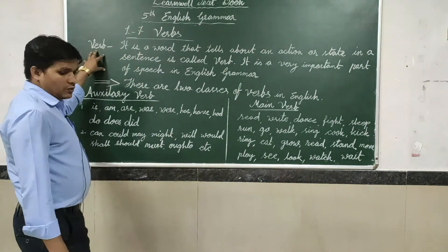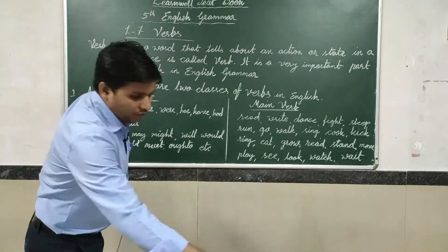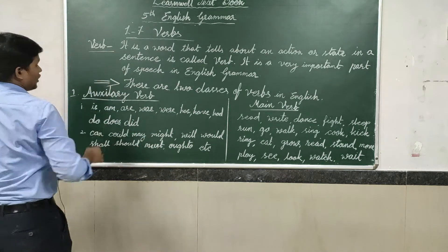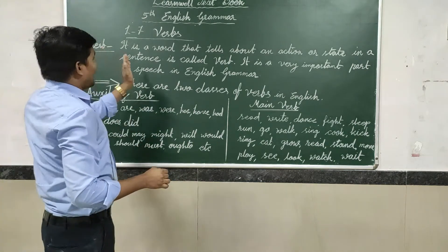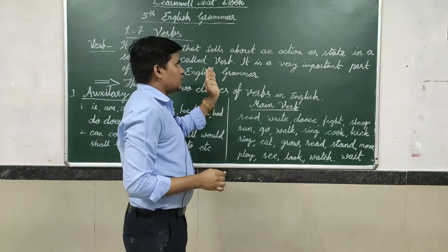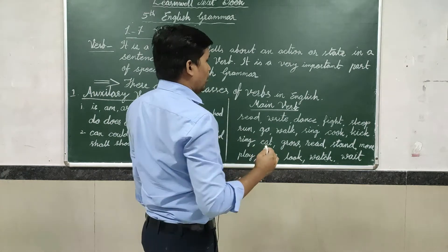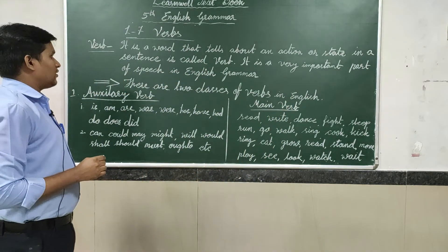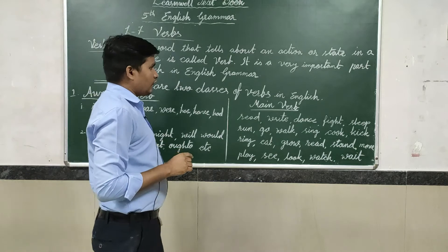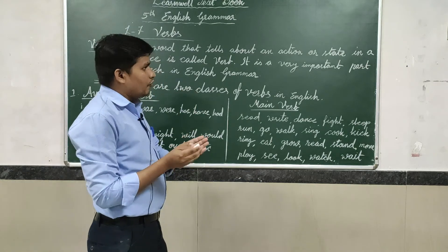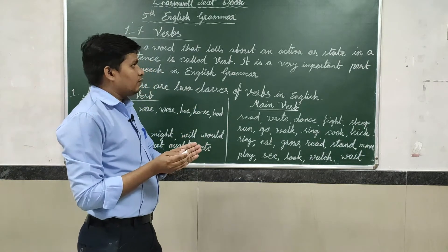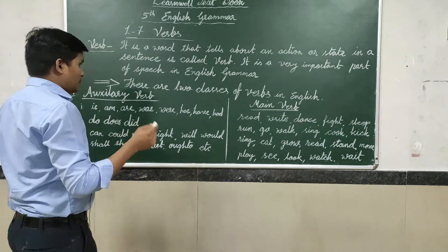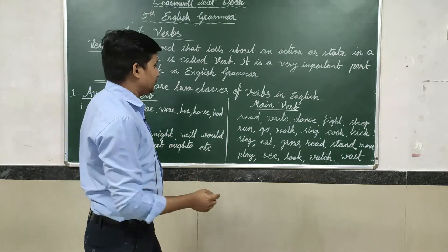First, I am going to explain to you the definition of the Verb. A verb is a word that tells about an action or state in a sentence. It is called a Verb, and it is a very important part of speech in English Grammar.